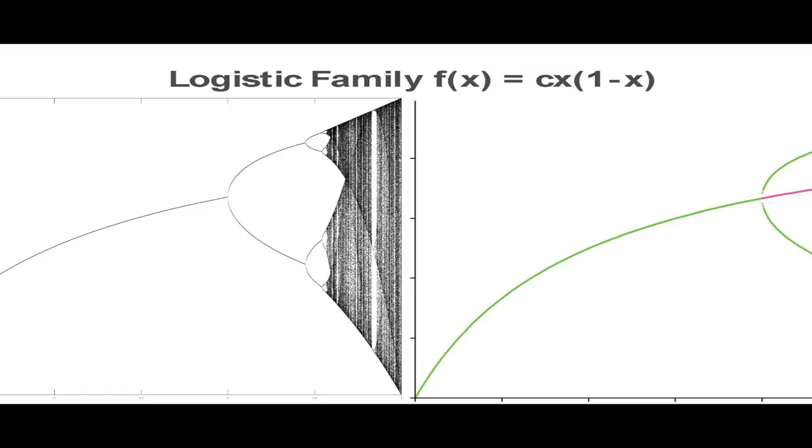This is the bifurcation diagram for the logistic family and this is the orbit diagram for the logistic family. Logistic families and their diagrams tend to be the hallmarks for chaotic images.